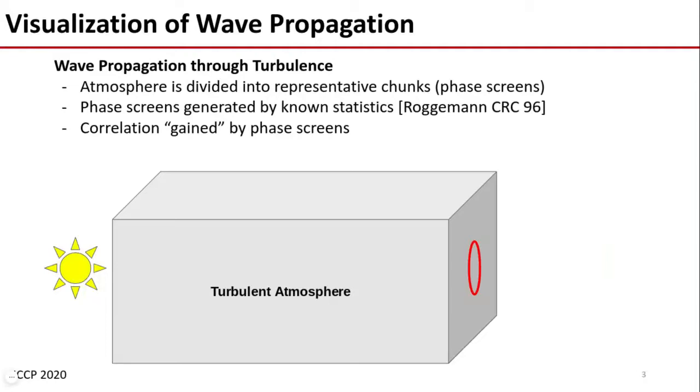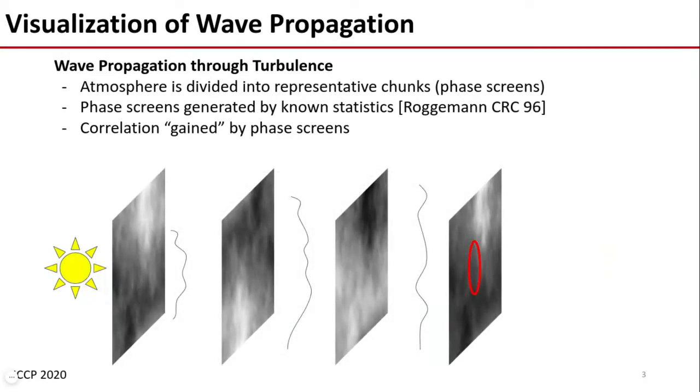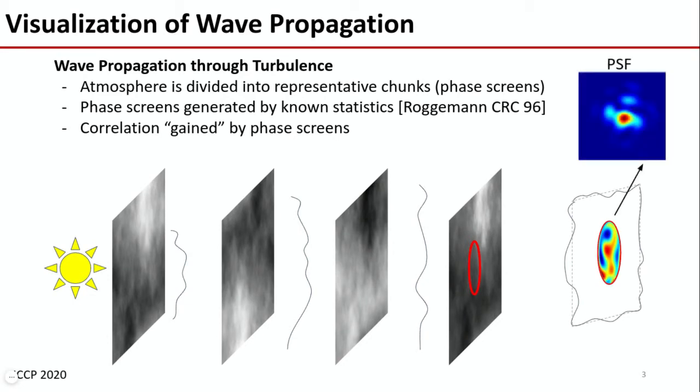When we introduce randomness into the atmosphere, we get random pockets of different indices of refraction, which will cause distortions in our wave. An easy way to visualize this is to divide the atmosphere into chunks and let the wave propagate through, becoming dented by the representative phase screens. When it eventually arrives at our aperture, what would have been flat is now dented up and distorted and produces a point spread function.